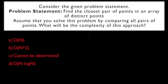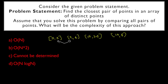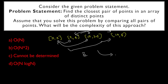Now we need to analyze the algorithm. The problem says assume you solve this by comparing all pairs of points. For example, with points like (5,3), (9,4), (15,23), (19,14), you find the distance between every pair. You will have two for loops to do this, comparing each and every pair — similar to bubble sort where you compare every single element. That is what you are doing here.